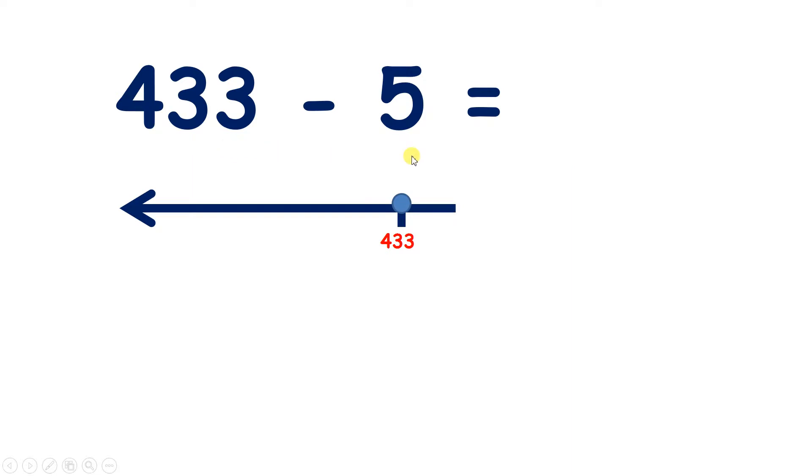Or if we do the same question using bridging, we know that if we're on 433, we can subtract the 3 units to get 430 and then subtract another 2 to get 428. So if we've subtracted 3 and subtracted another 2, we've subtracted 5 altogether. So 433 subtract 5 equals 428.